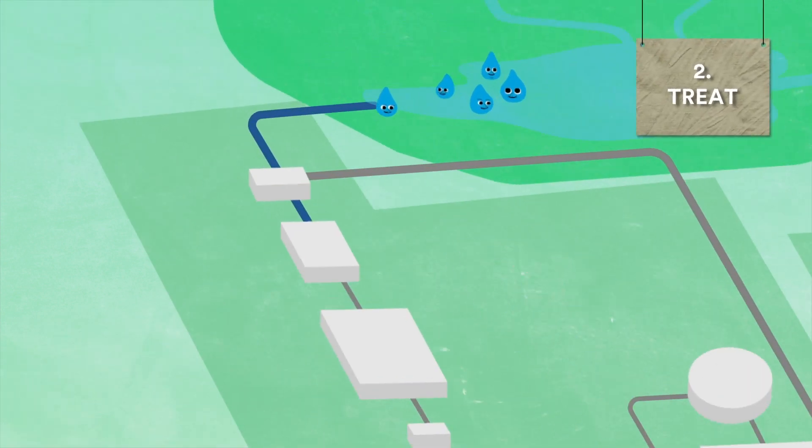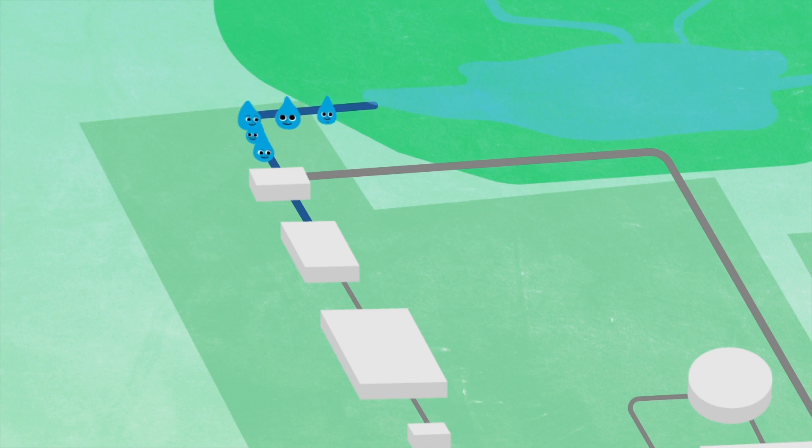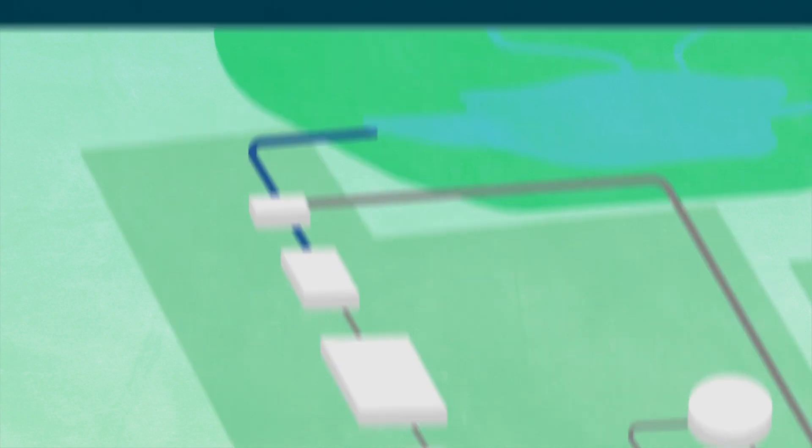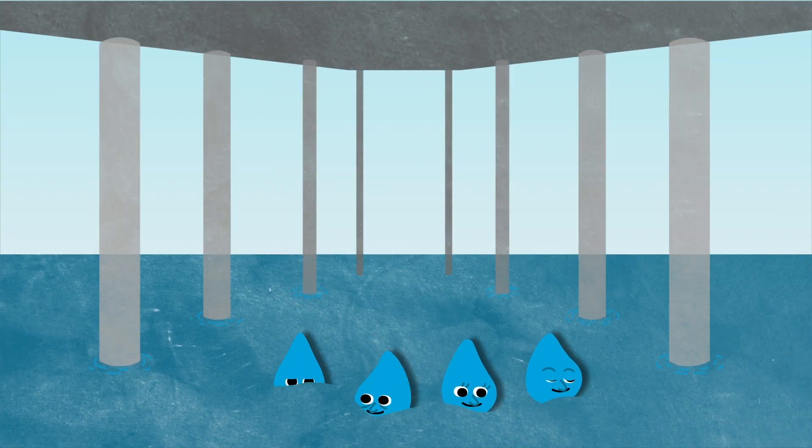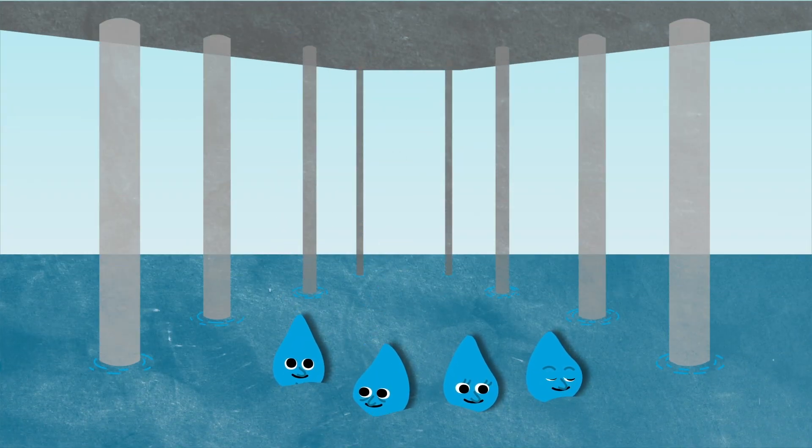2. Treat. Once the water is collected it goes along underground pipes to a water treatment works where it is cleaned to make sure it's safe for people to drink. Once it is cleaned this treated water is then stored in covered reservoirs.